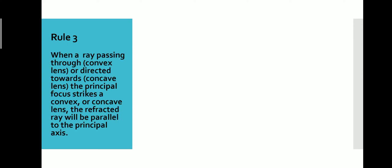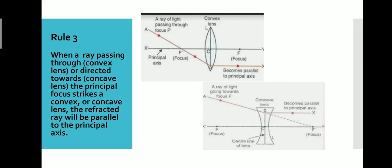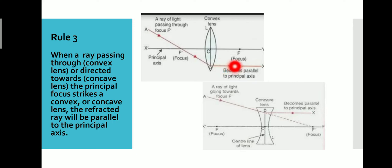Rule 3: when a ray passing through or directed towards the principal focus strikes a convex lens, the refracted ray will be parallel to the principal axis. That is, when the ray travels from a distance and strikes through the principal focus and then enters into the lens, the refracted ray will appear parallel to the principal axis. These are the three rules of refraction of light by the convex or concave lens.